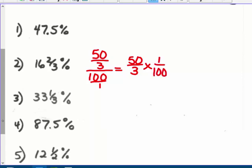And then, yes, I would cross-cancel to get 50 goes in there once, goes in here twice, and you get the answer 1 sixth. 16 and 2 thirds percent is equivalent to the fraction 1 sixth. Do that same thing with number 3 and number 6, and we'll go over these in class.